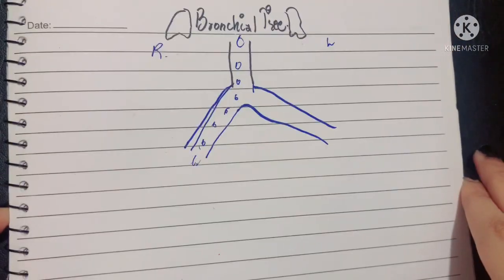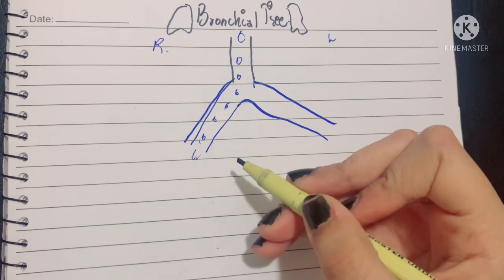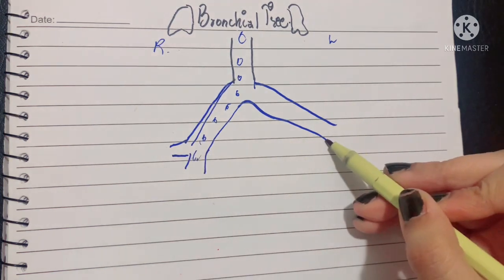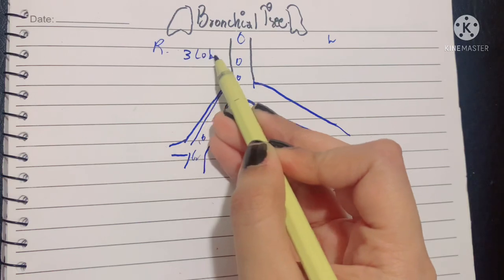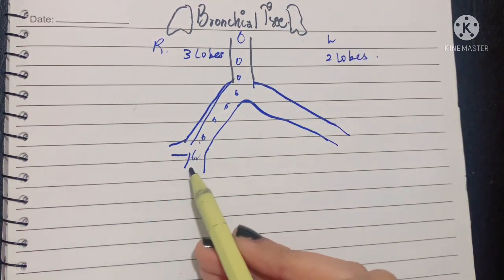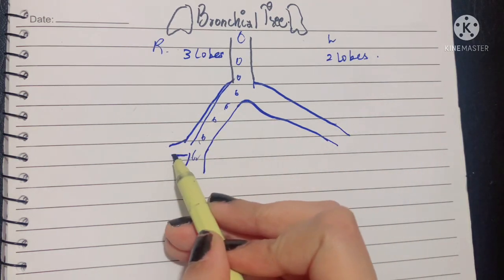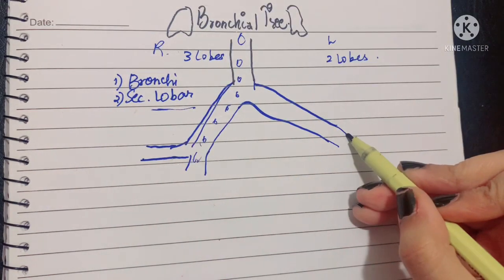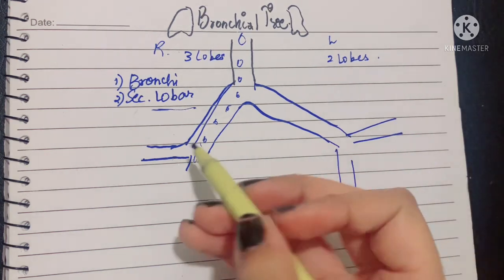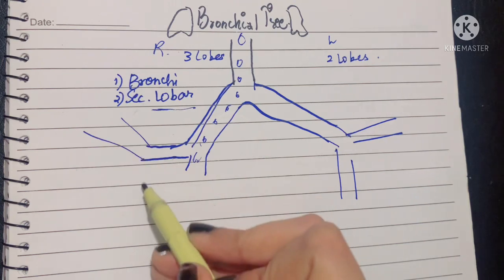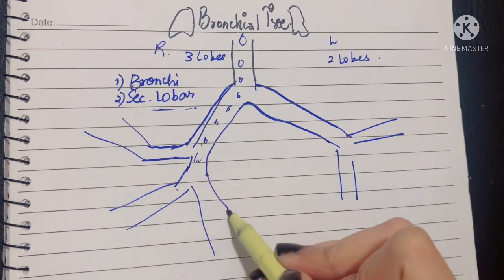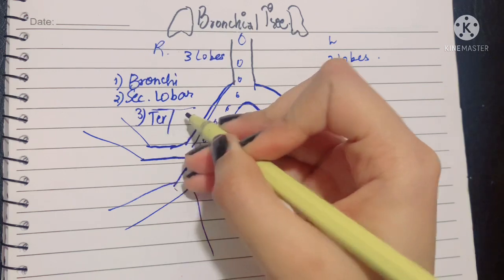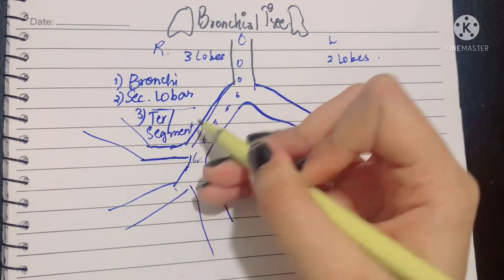After the division of the bronchi, the right bronchus divides into an upper (eparterial) and a lower (hyparterial) bronchus. Since there are three lobes in the right lung and two lobes in the left lung, these principal bronchi will further become the secondary lobar bronchi — two on the left side and three on the right side.